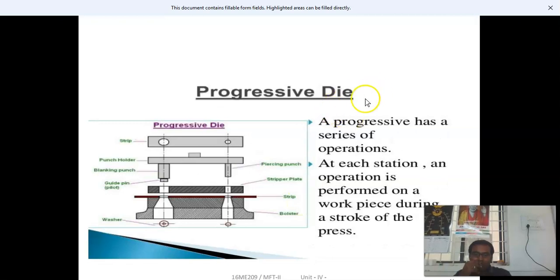A progressive die has a series of operations. At each station, an operation is performed on the workpiece during a stroke of the press. Examples include piercing punch and blanking punch. In a single stroke, different shapes can be produced according to requirements.